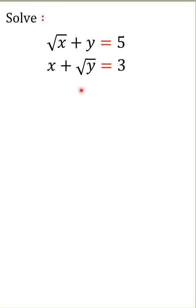Here we have two equations: √x + y = 5 and x + √y = 3. We have to solve for x and y. Let's start by considering √x = a and √y = b.